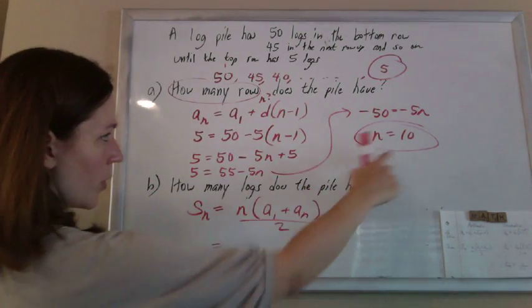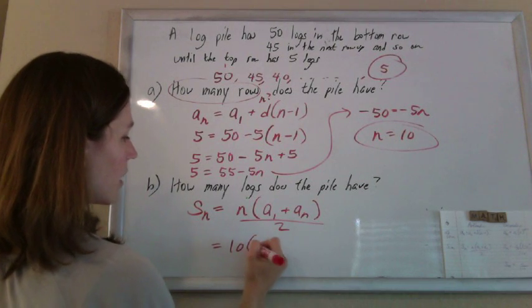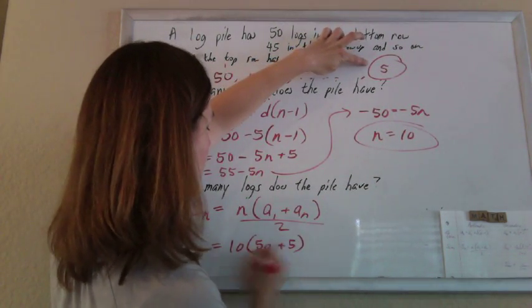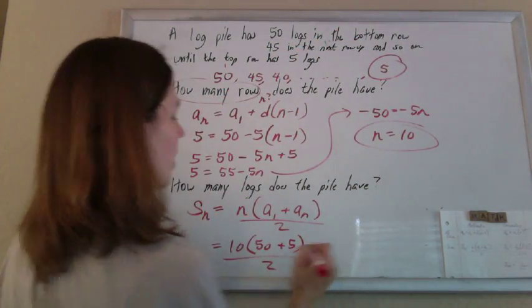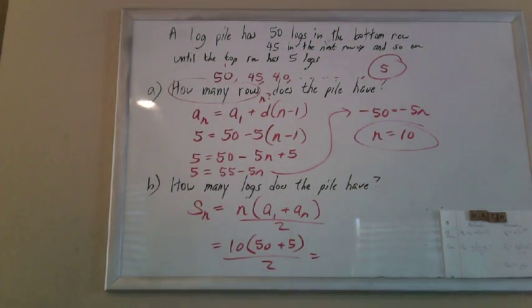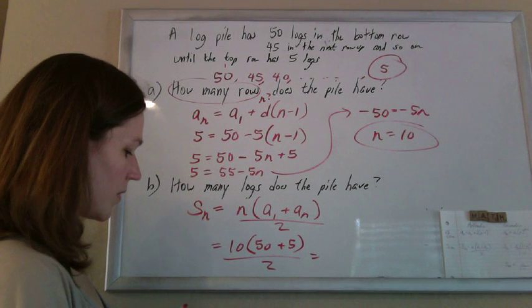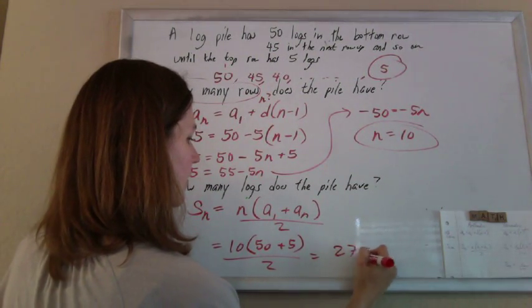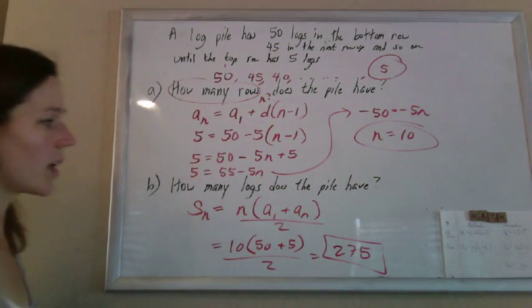So the number of rows we figured out was 10, the first term is 50, the last term is 5, divide by 2. I can do this. This is 5 times 55, 5 times 55 is 275, and that's it. Awesome.